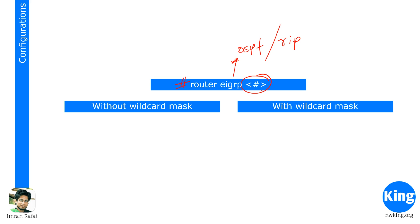In OSPF, the process ID need not match for neighbors to form. But in EIGRP, this autonomous system number has to match with your neighbor — only then will the neighbors form.